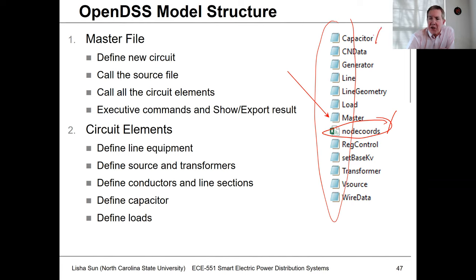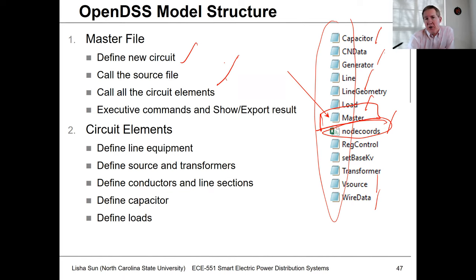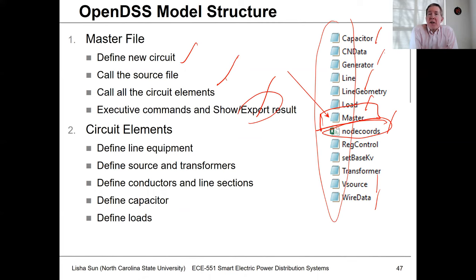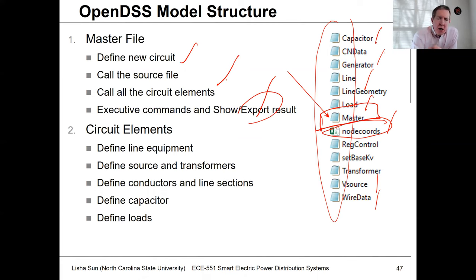For each of the different element types, you have a file generated. The key thing is the master file — the master file defines a new circuit, calls all the other circuit element files, and then you can add show commands to display variables or export to a spreadsheet. I would recommend having one more file on top of this, like a run case file, where you call the master file so you don't keep manipulating it directly. You just make changes in the top-level file.